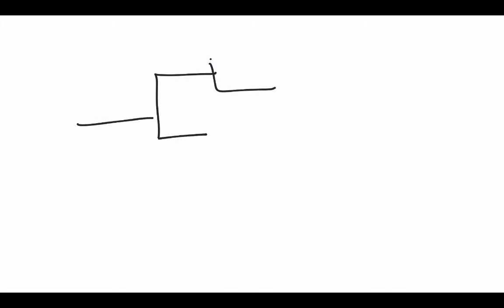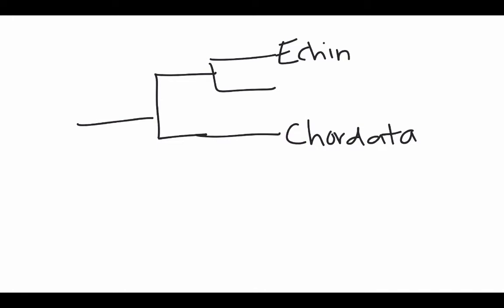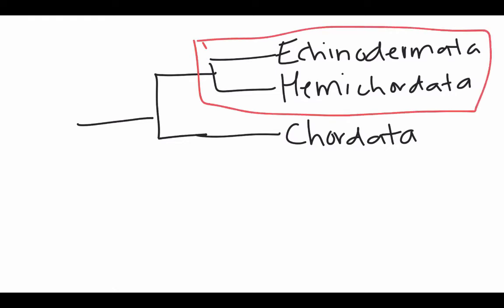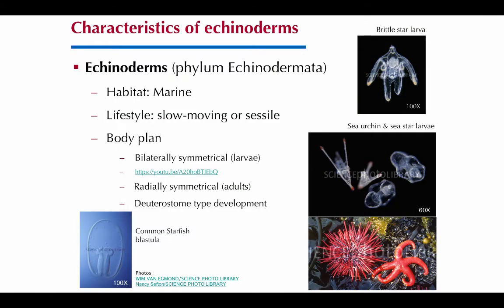Within deuterostomia there are three major groups. We have the chordates, or phylum Chordata, which we will look at in a different lecture. Then we have the Echinodermata and the Hemichordata — those are the two we will be looking at right now. The first of those two phyla we will look at is the Echinodermata.